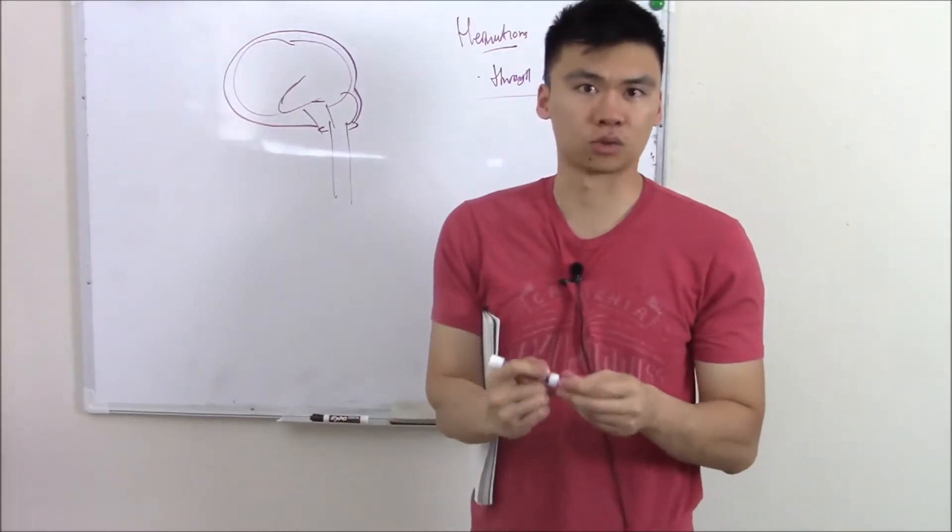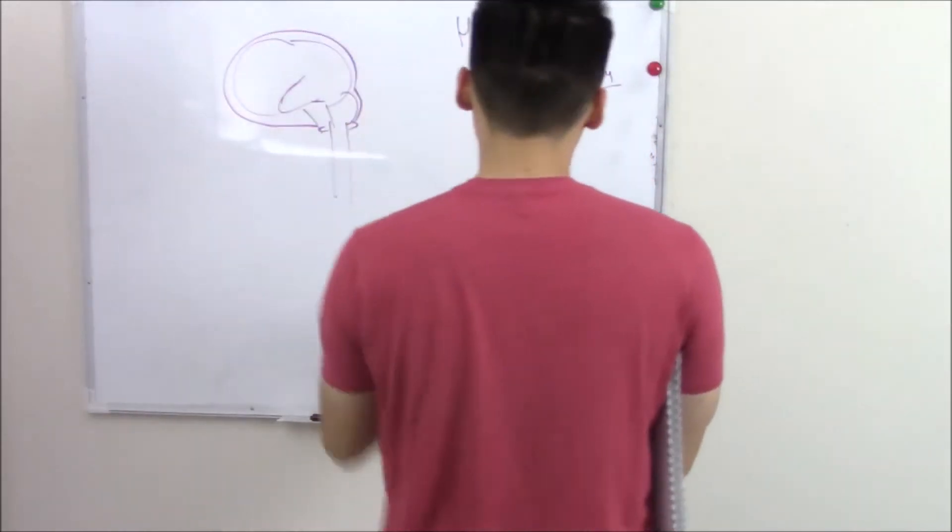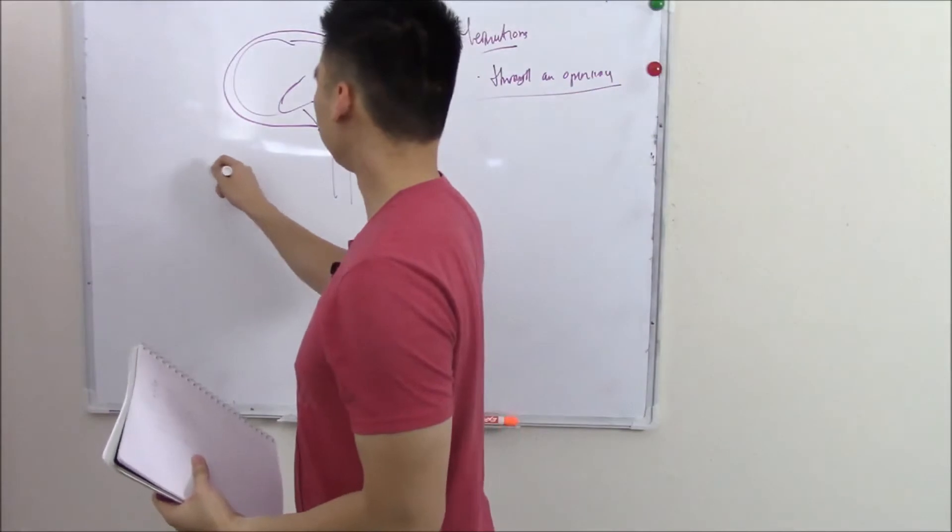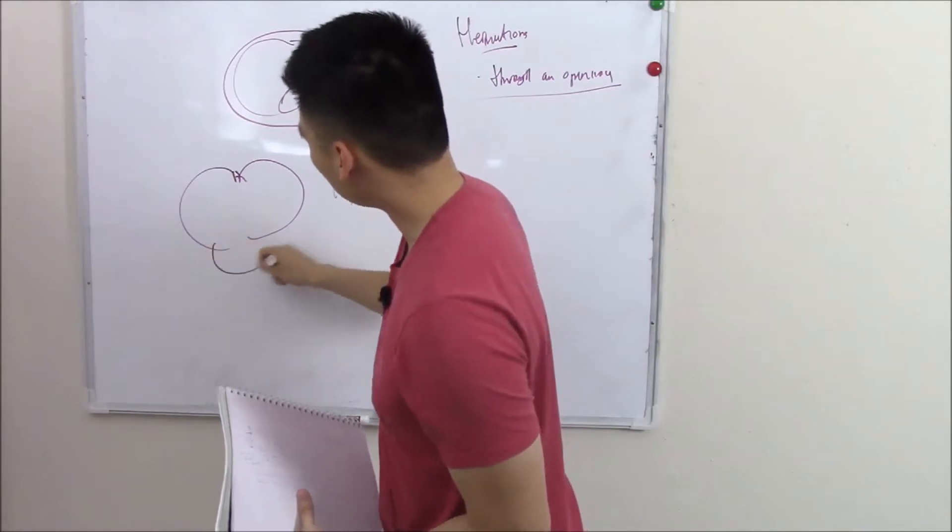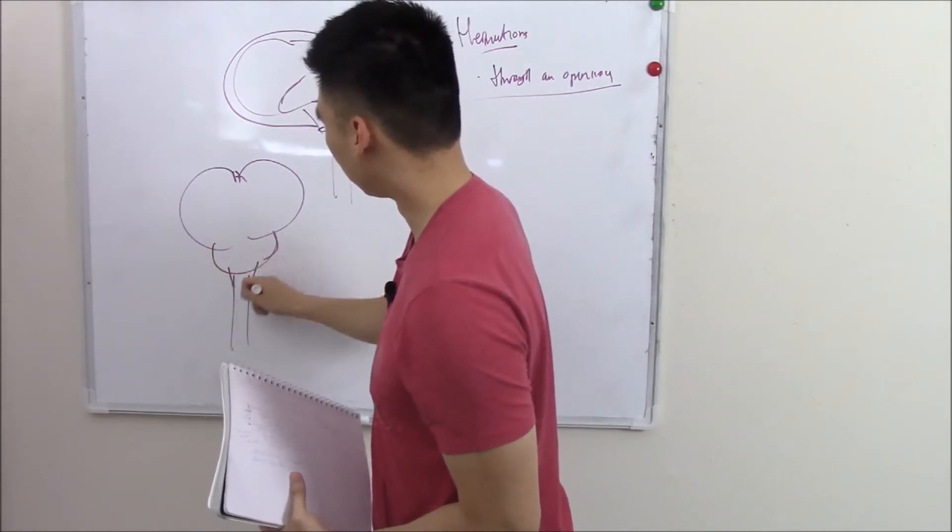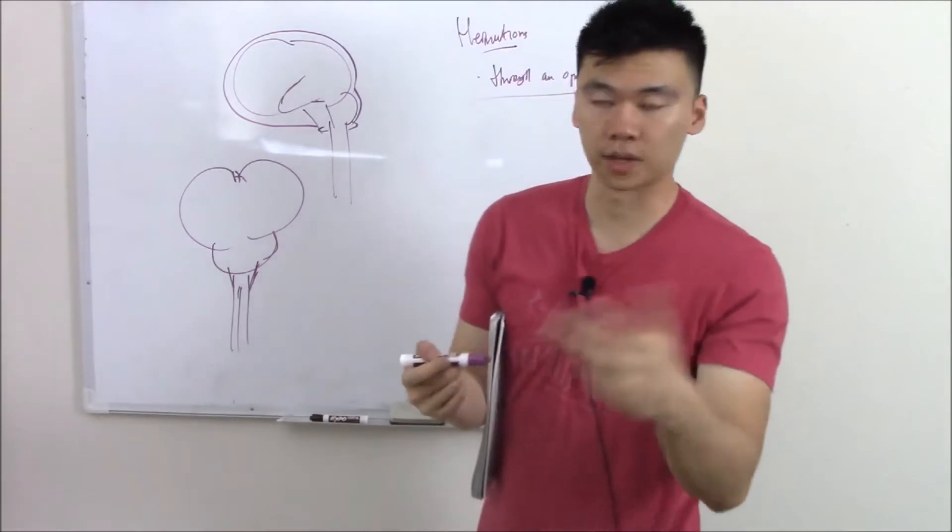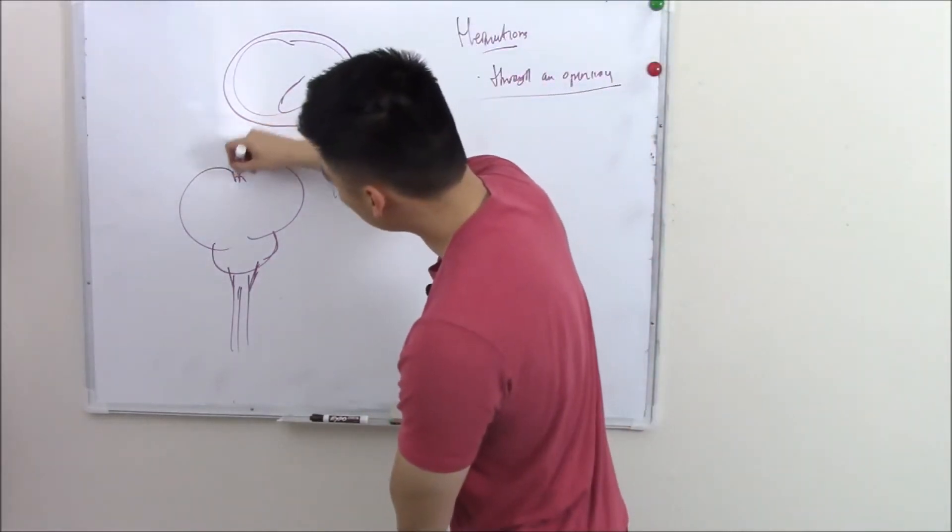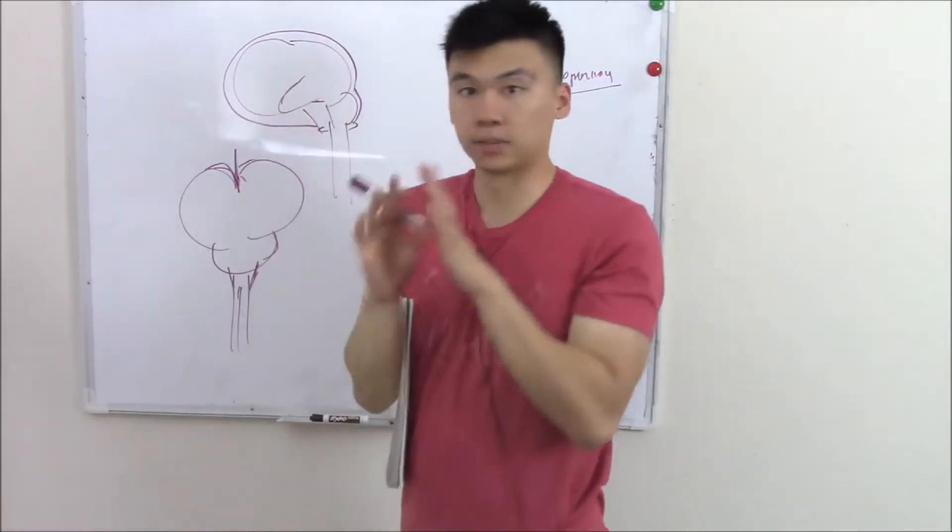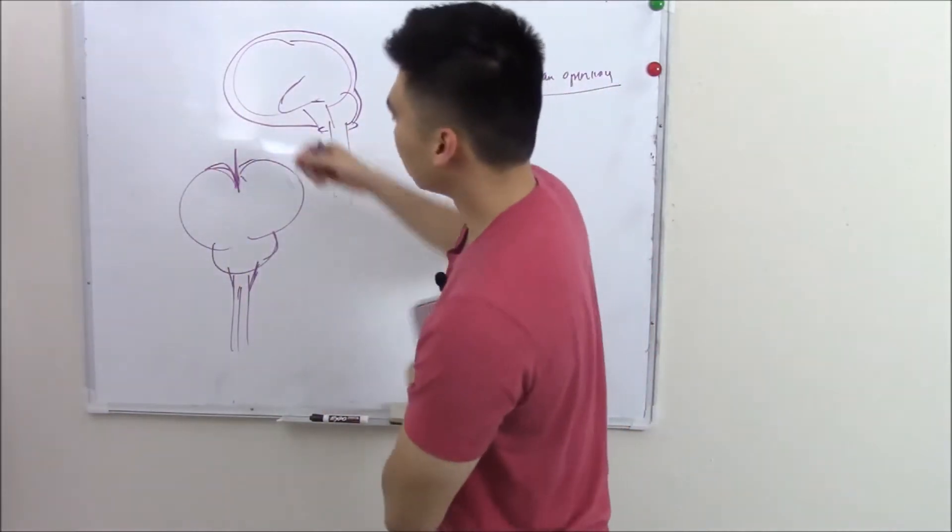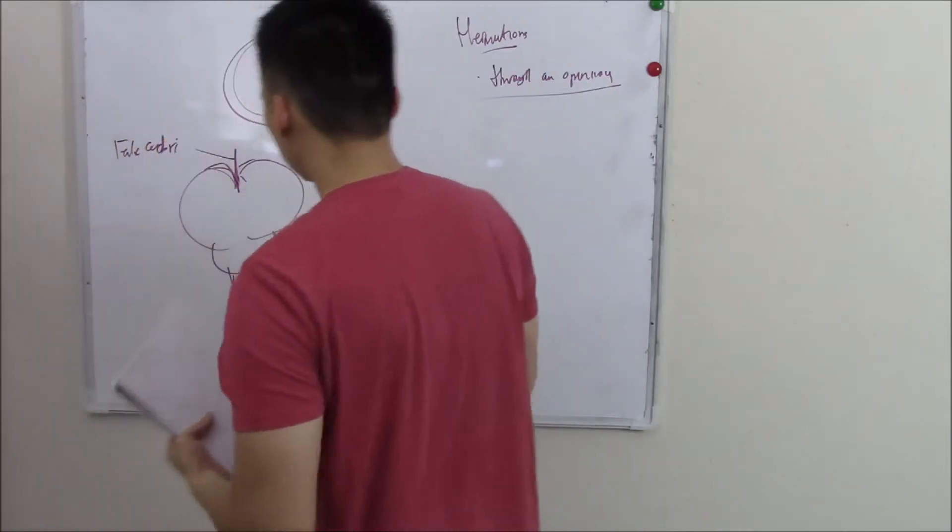Is there any more structures these things can herniate through? In fact, there is. If we look at the brain from the back view, you have your hemispheres and then your cerebellum, your brainstem, and spinal cord. Your CNS is covered by your meninges: dura mater, arachnoid, and pia mater. Your dura mater forms this invagination that goes right between the hemispheres and keeps them apart. We call this structure the falx cerebri.